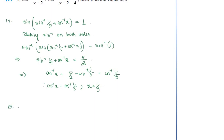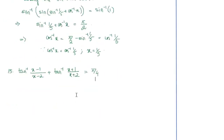Now coming to question number 15. We are given: tan⁻¹((x−1)/(x−2)) + tan⁻¹((x+1)/(x+2)) = π/4, and we need to compute the value of x. We will be applying a formula we know: tan⁻¹x + tan⁻¹y = tan⁻¹((x+y)/(1−xy)).